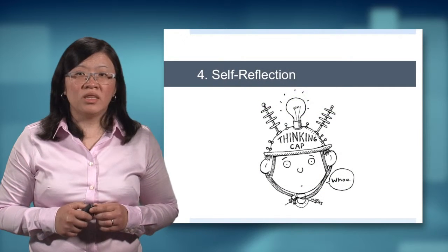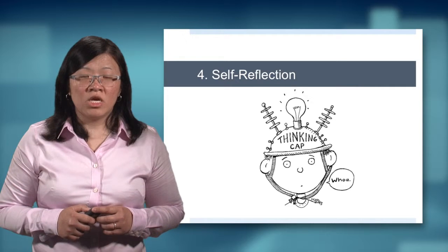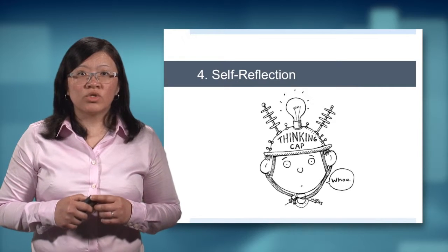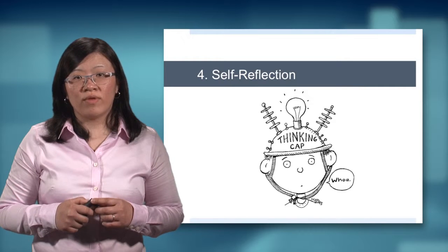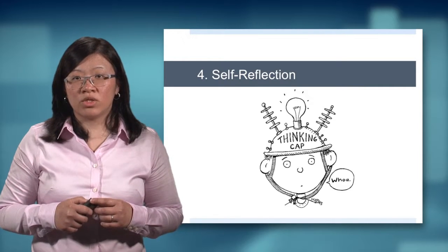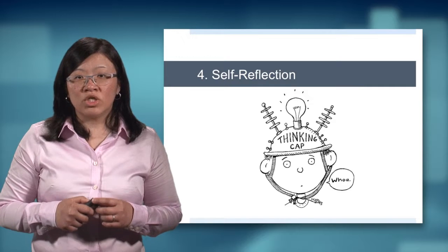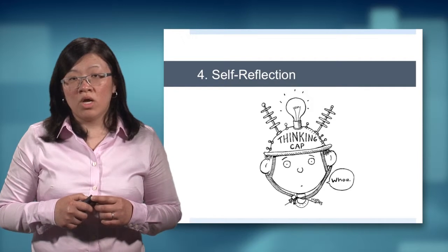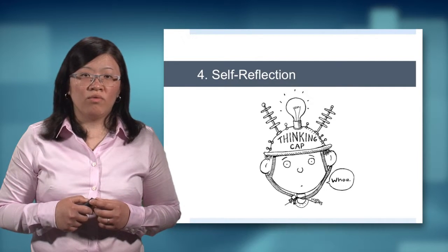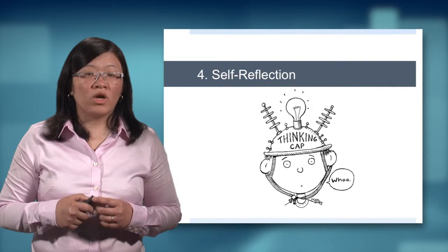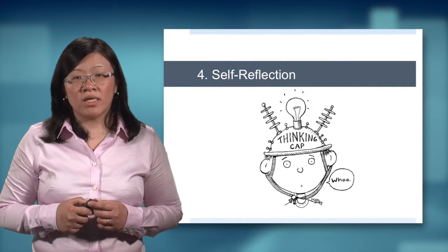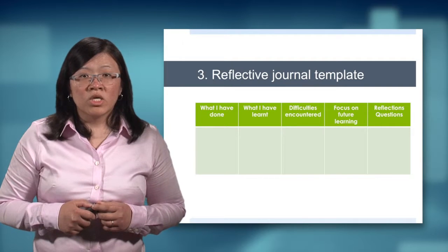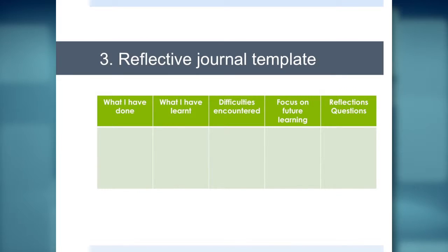The fourth teaching strategy is the self-reflection piece. Think about the different questions you want the student to consider in order to achieve their goals. This self-reflection can be done vocally, on their own, in their own spare time, but it can also be done through a very concrete mechanism such as the reflective journal. The reflective journal is a teaching strategy that is very concrete and can give a face, if you will, to self-reflection.